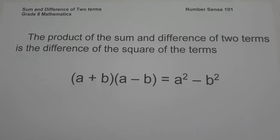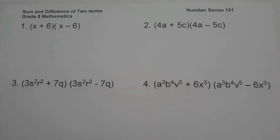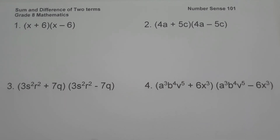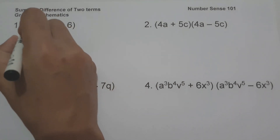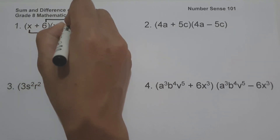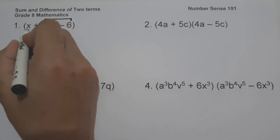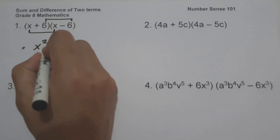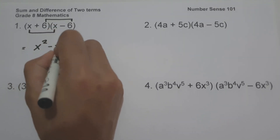Let's start with example number one: quantity x plus six multiplied by the quantity x minus six. To simplify, remember the product of the sum and difference of two terms is the difference of the squares. Multiply first term to first term and last term to last term: x times x is x squared, and six multiplied by negative six is negative thirty-six. So the answer is x squared minus thirty-six.